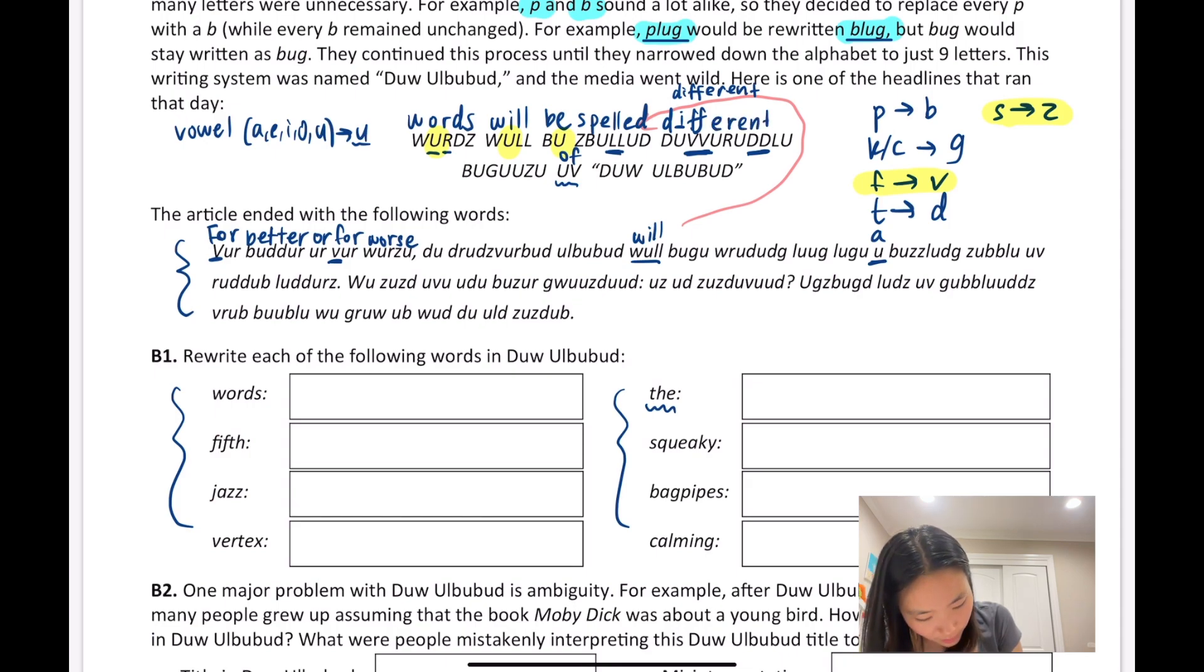If this is indeed correct, then I make two observations. Notice the u and the y - it seems like in this language they consider y to be an alphabet or a vowel too, which makes sense. And also it seems like d also got turned into n. So the d could be t, it could also be n. Okay great, so 'words will be spelled differently.'